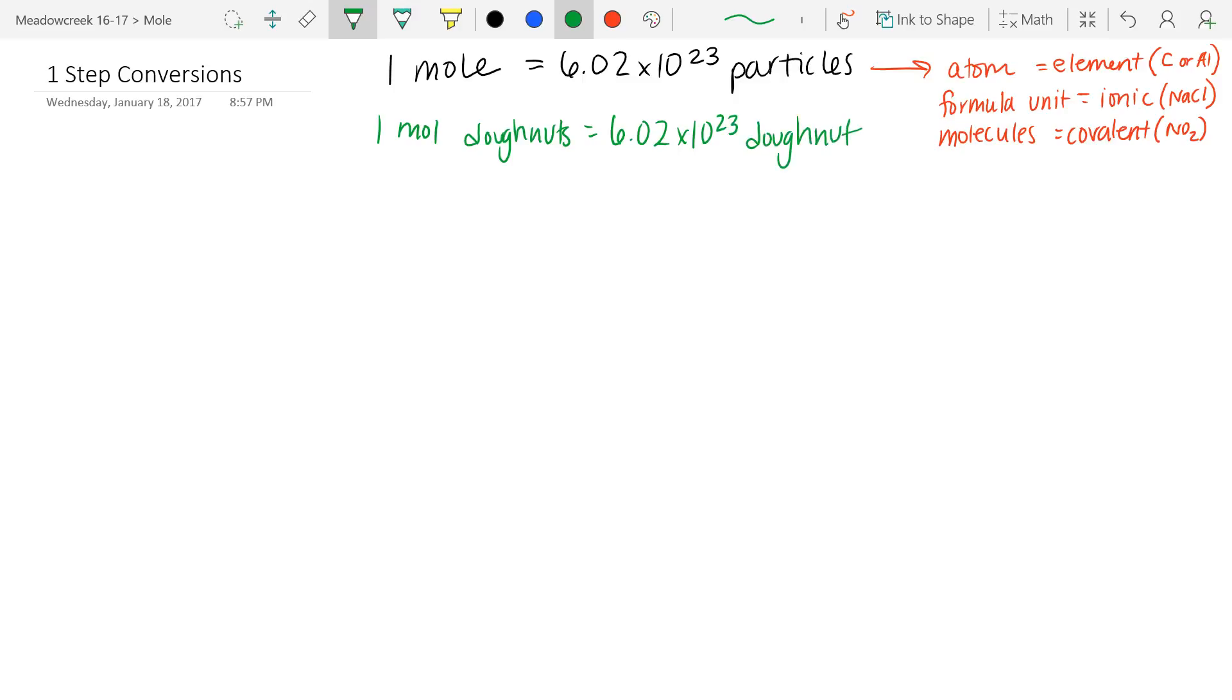Now, if you need to know how big that number is, it's literally 602 with 21 zeros behind it. So that's 3, 6, 9, 12, 15, 18, 21.